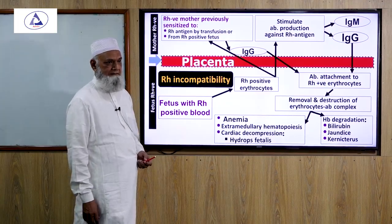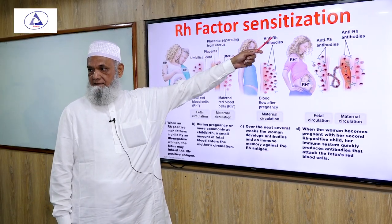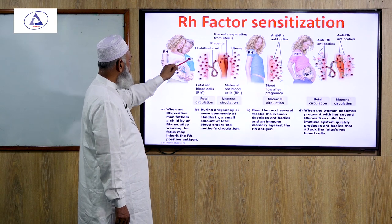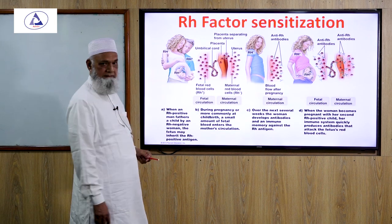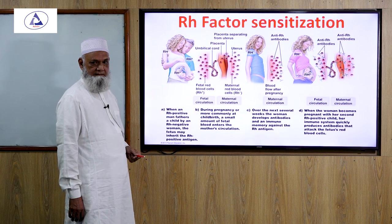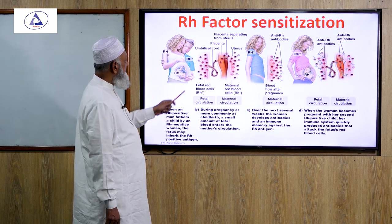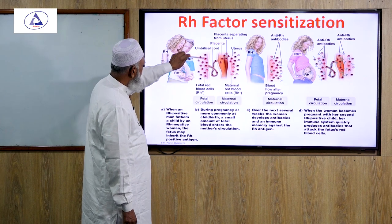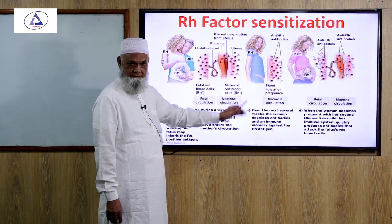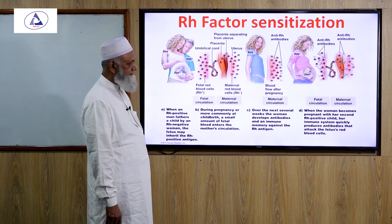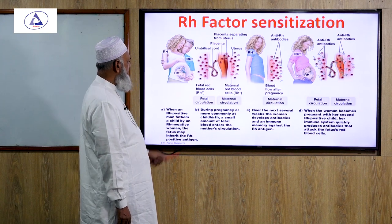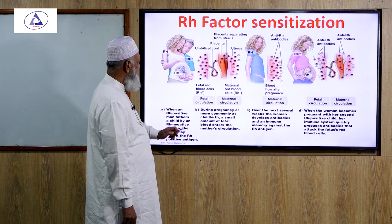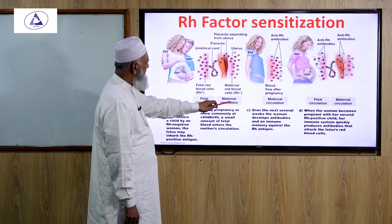Rh factor sensitization: the mother is Rh negative, the father is Rh positive, and the fetus is Rh positive. The placenta connects via the umbilical cord; fetal tissue and maternal tissue are separated by the uterus. Fetal blood is Rh positive while maternal blood is Rh negative, with separate fetal and maternal circulations.